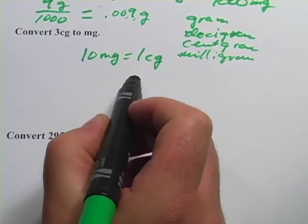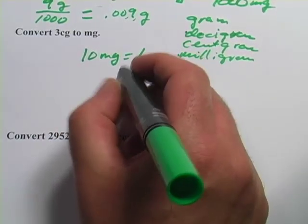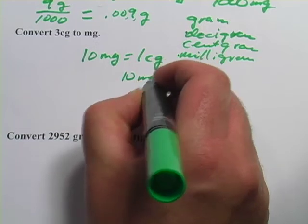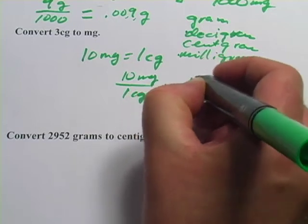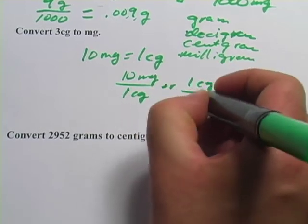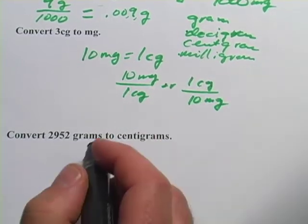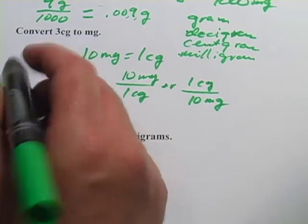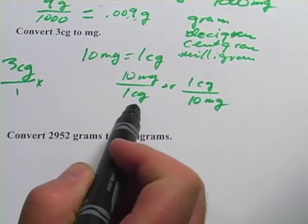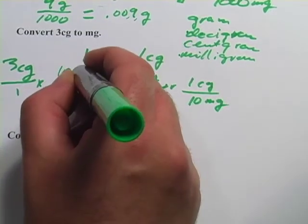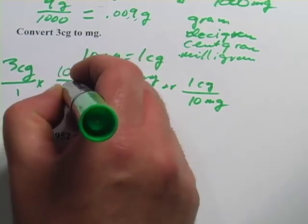Now that you've got that fact, you can turn it into a unit multiplier, 10 milligrams per centigram or 1 centigram per 10 milligrams. And then we can set up our problem. We start with 3 centigrams. And we want to use the conversion factor where centigrams are on the bottom. So that's 10 milligrams per 1 centigram.